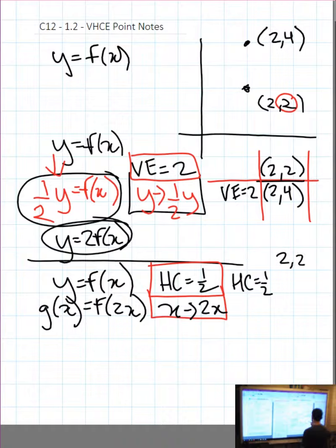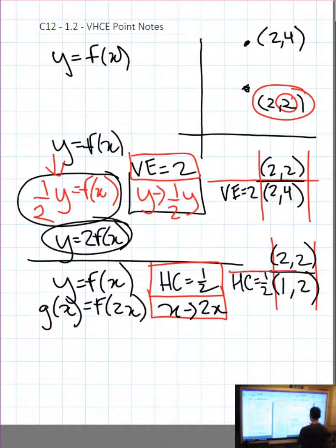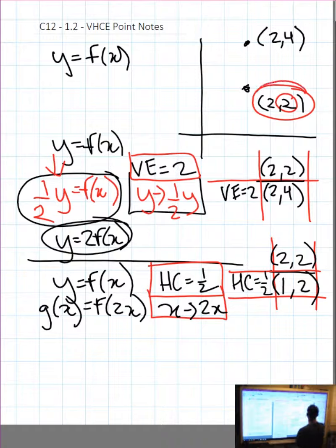My old point was (2, 2) — the original point we started with. I underline the point, and a horizontal compression of 1/2 is going to multiply the x value by 1/2. And 2 times 1/2 is simply 1. We want it very tabular, with lines and columns, very clean. So we take our old point (2, 2), horizontally compress by 1/2, and get the new point (1, 2).